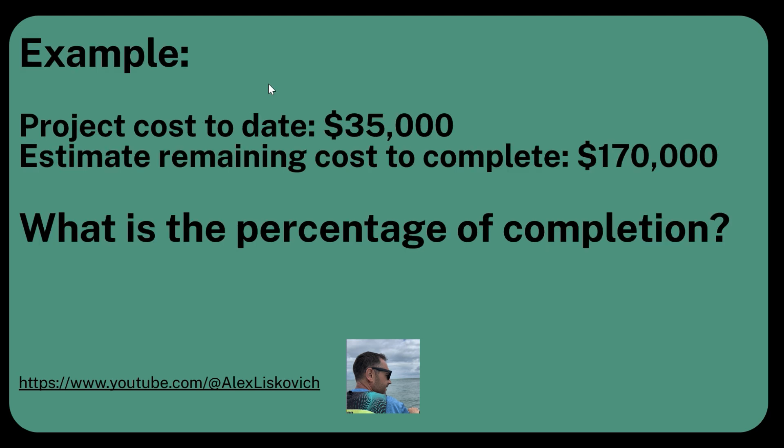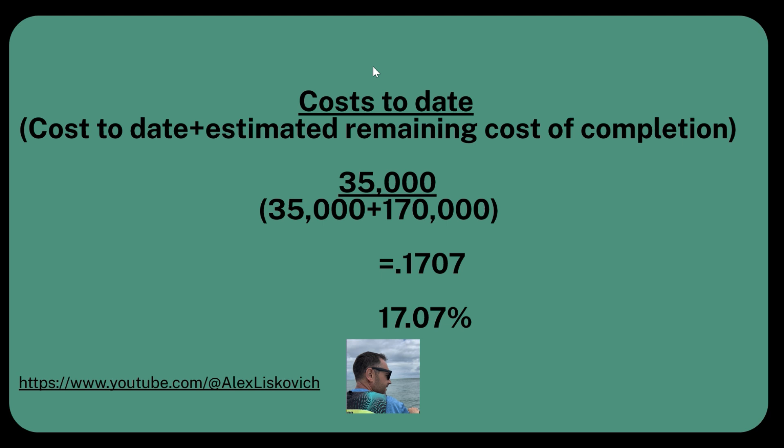Let's do another one. Project cost to date: thirty-five thousand dollars. Estimated remaining cost to complete: one hundred and seventy thousand dollars. What is the percentage of completion? You can pause here to do the math, or we can move on. So you've got thirty-five thousand divided by thirty-five thousand plus one hundred and seventy thousand — that's thirty-five thousand divided by two hundred and five thousand, which equals 0.1707.